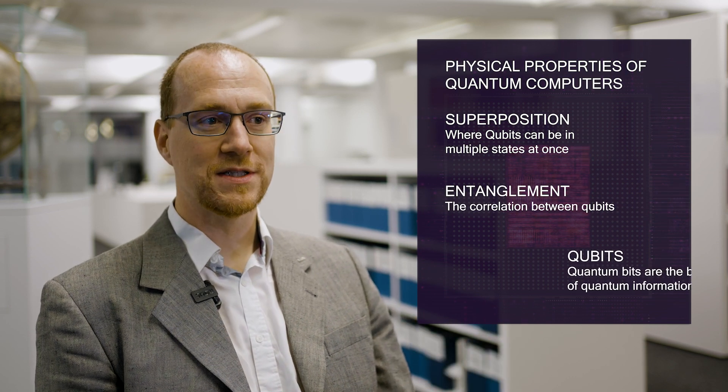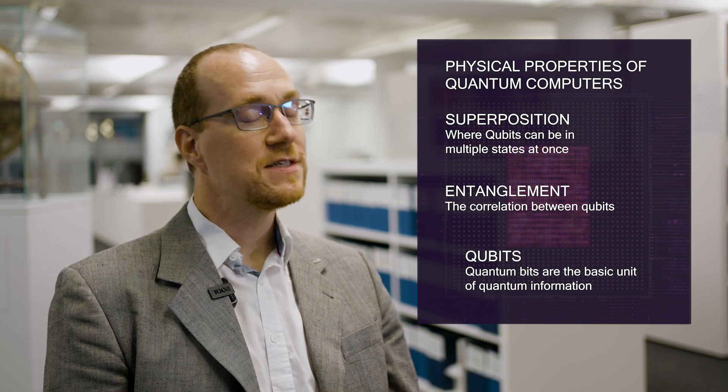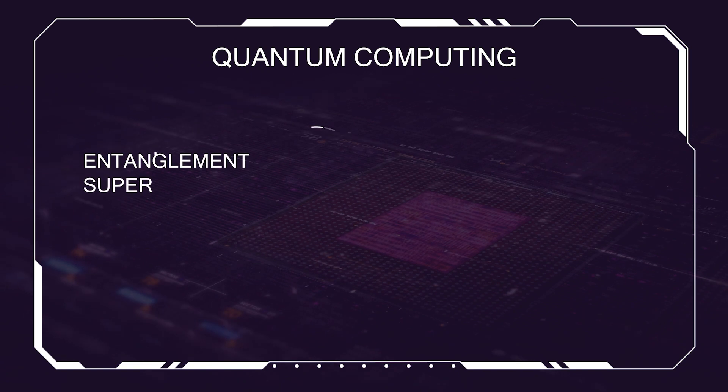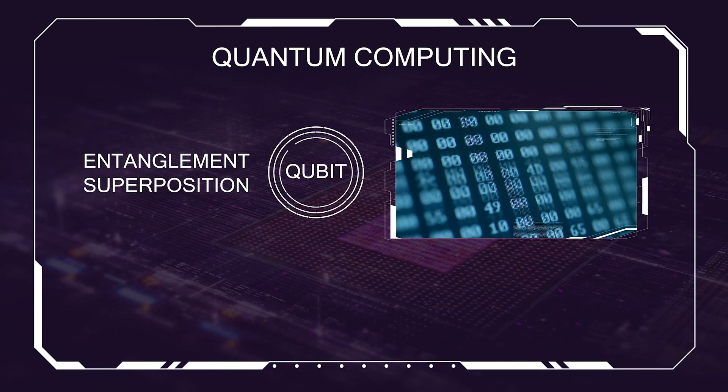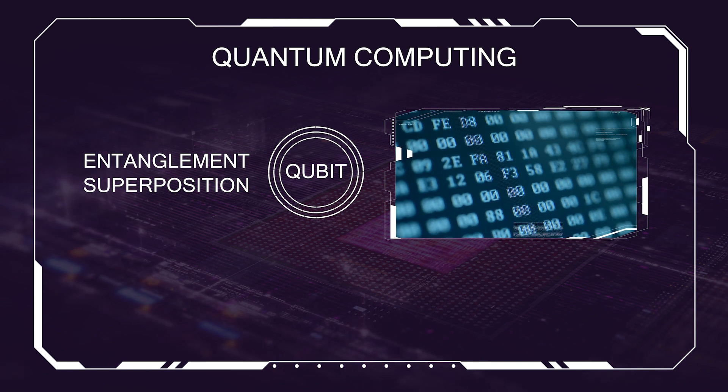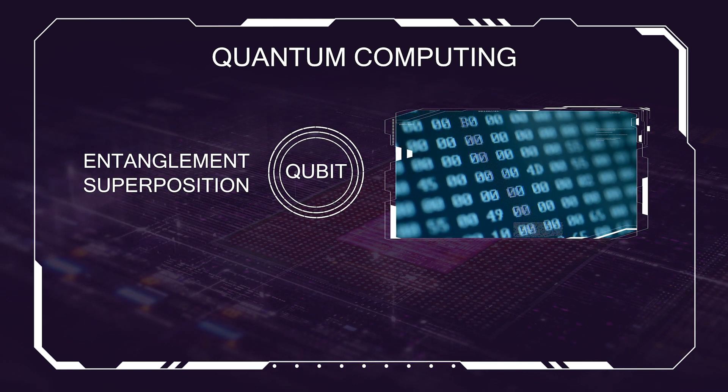A quantum computer is a compute device that takes advantage of physical properties of quantum mechanics in order to solve computational problems. The physical properties that make the quantum computer especially powerful are superposition — such that qubits can exist with a certain probability distribution in both a zero and a one state — and entanglement, such that there are certain correlations between these qubits that can live at the same time in these states. These properties allow new algorithms to be invented to exploit quantum computation, solving the same computational problems with much less operational intensity.